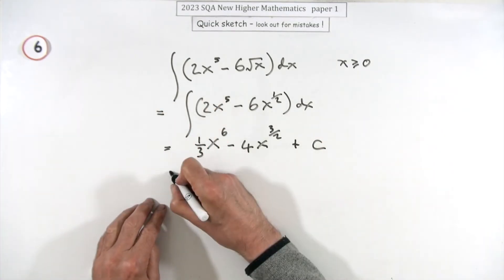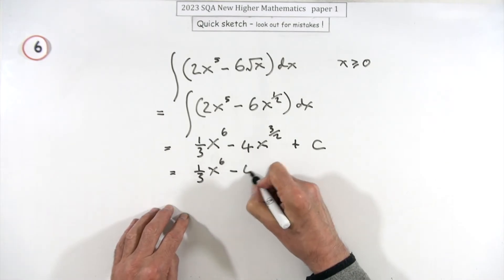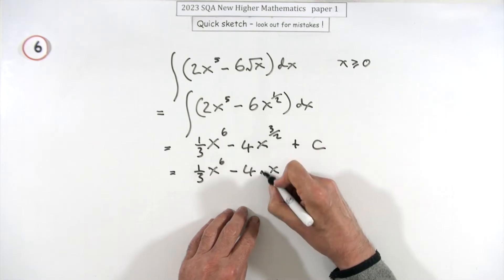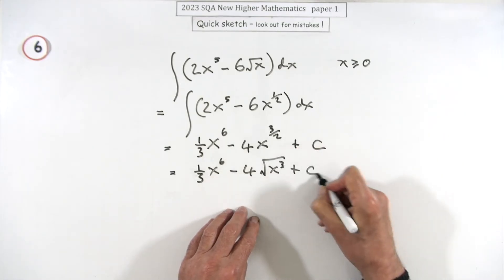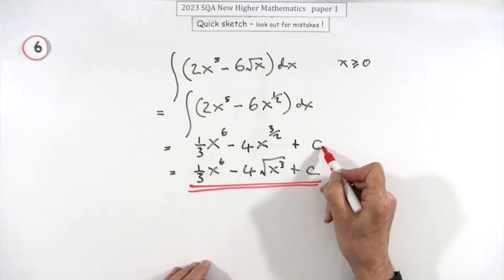And then don't forget plus c, and that might well be the marks then. Unless you want to put it back the way you found it, which was one third of x to the six minus four times the square root of x cubed plus c, but that's probably all they actually wanted.